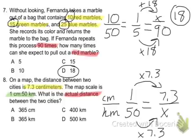50 times 7.3 is 365. So the answer to number 8 is B. Thank you.